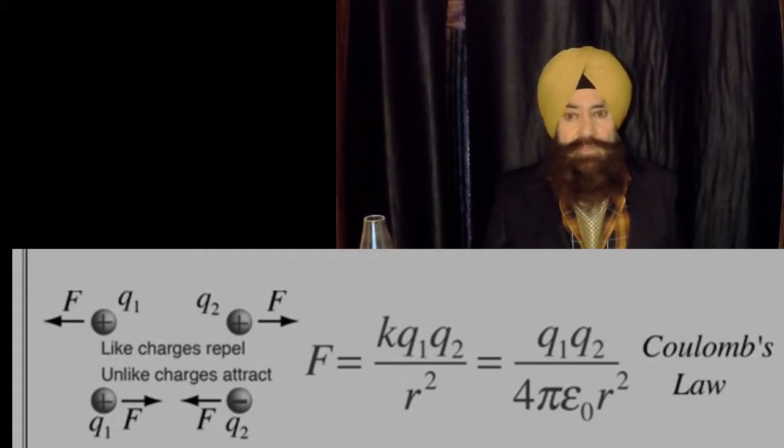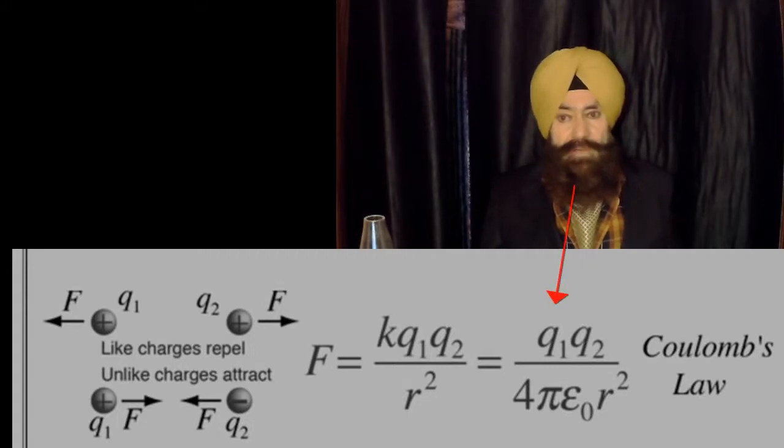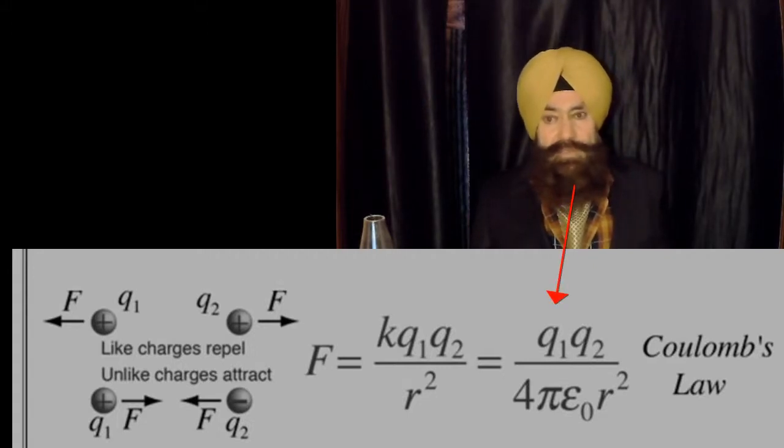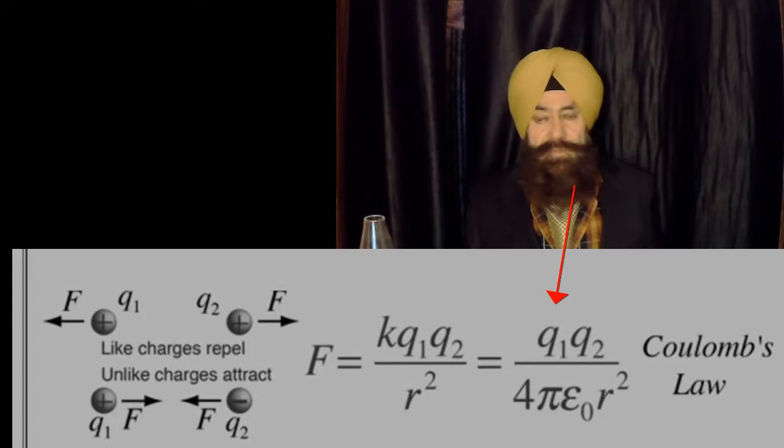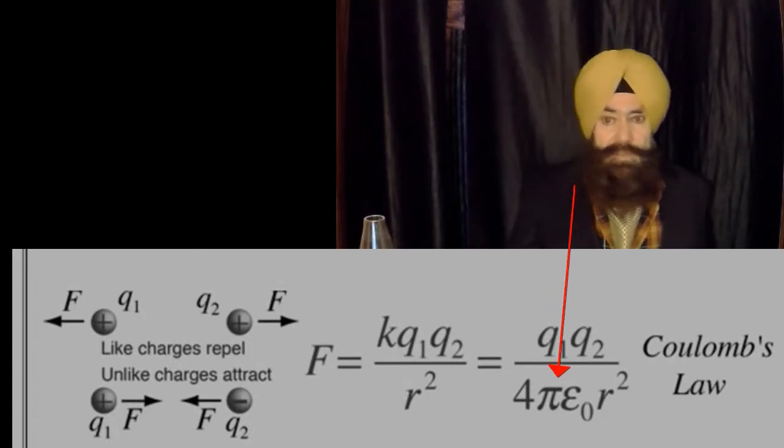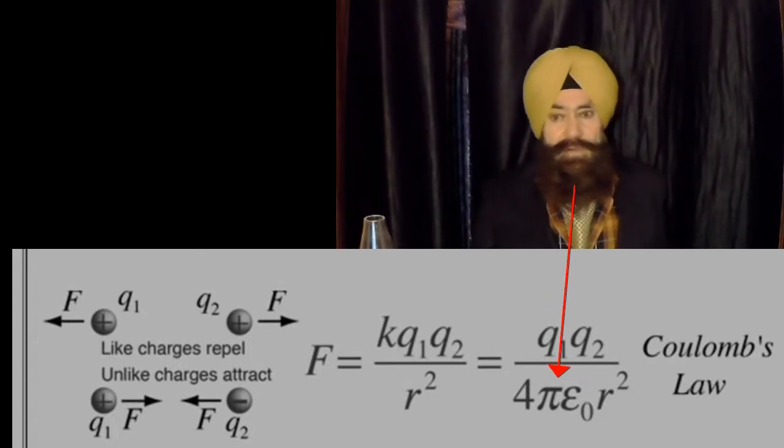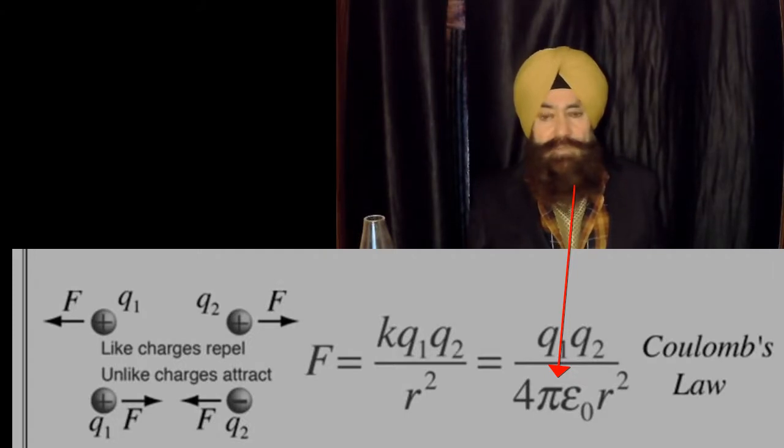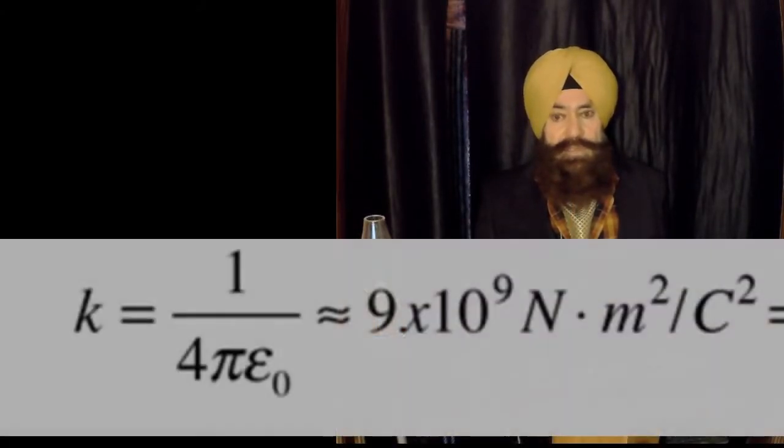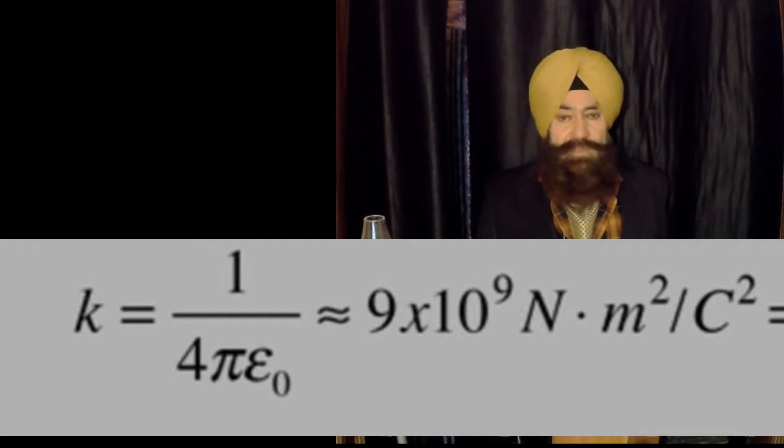That force is equal to 1 over 4 pi epsilon naught times q1 q2 by r square. Here, 1 over 4 pi epsilon naught is called Coulomb's constant, and its value is 9 into 10 raised to the power 9 for the vacuum or free space, with unit Newton meter square upon Coulomb square.